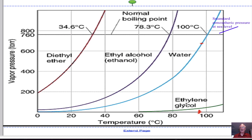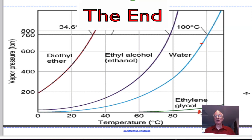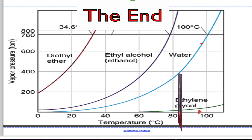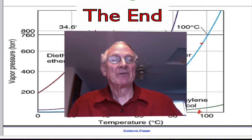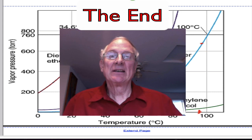Ethylene glycol has much stronger intermolecular bonds and a much lower equilibrium vapor pressure, so even at 100°C it's not even close to the pressure required for it to boil. So what we've learned today covers three things: evaporation, evaporation equilibrium and condensation, and finally what takes place during the process of boiling.